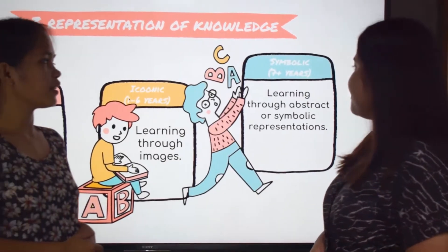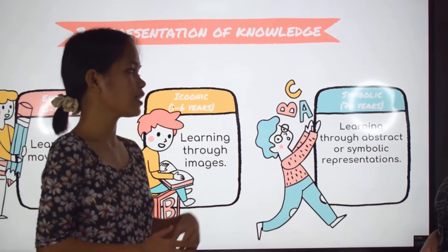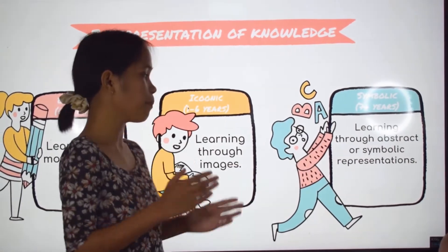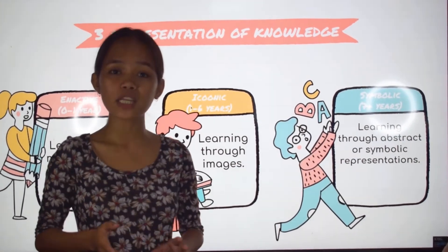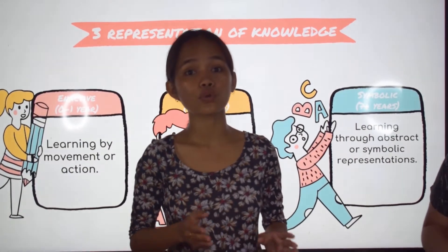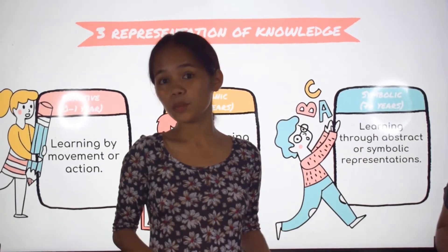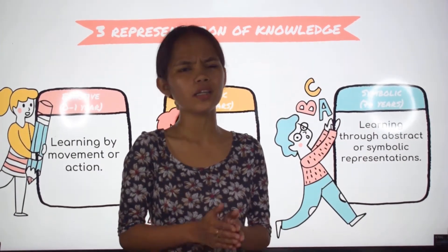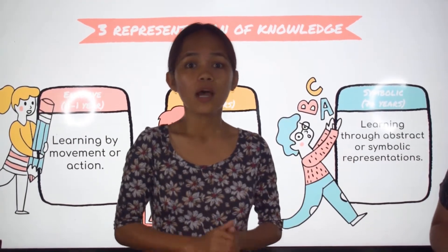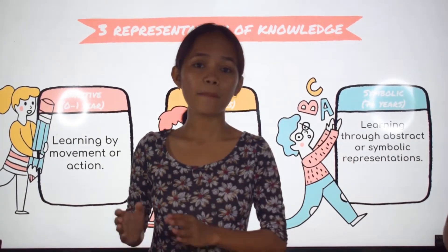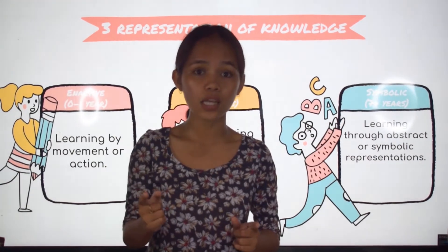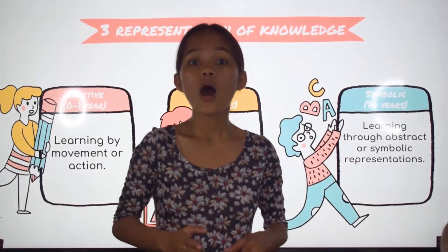Lastly, we have the symbolic. This learning is through abstract or symbolic representations. In this stage, most information is stored in words, mathematical symbols, or other symbolic systems. For example, a child solving a math equation is representing his knowledge symbolically through numbers.